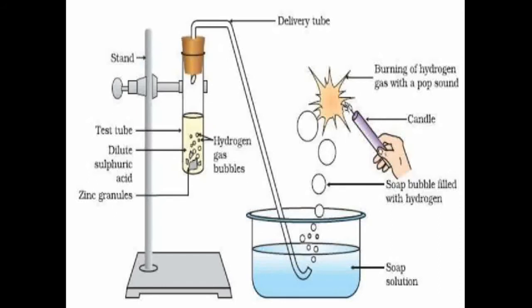Acid reacts with metal to produce hydrogen gas. This is a soap water tub. A delivery tube is placed over the soap water tub. If you hold a lighted candle above the soap water tub, the soap water becomes warm. Soap bubbles filled with hydrogen gas form on the delivery tube placed over the soap water tub. This is an example of acid reacting with metal to produce hydrogen gas.